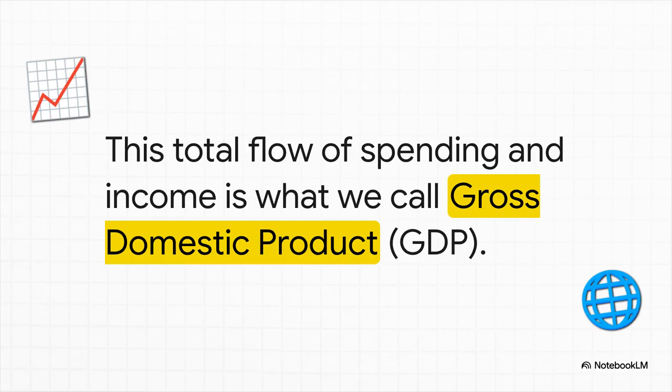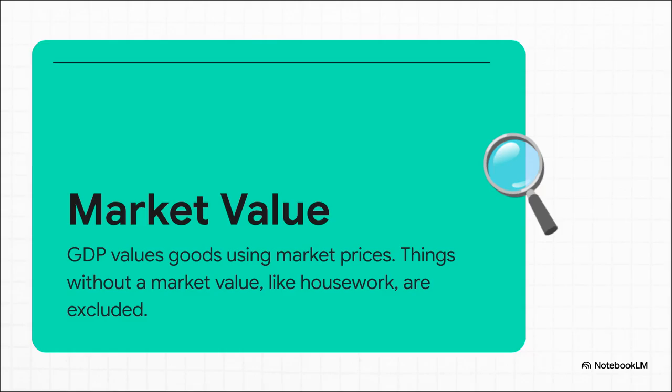At its heart, GDP is just our attempt to measure the total size of that flow. So what is GDP really? Let's build the official definition piece by piece. First up: market value. GDP has to add up all sorts of different things — cars, coffee, computer code, you name it. How do you do that? You use their market prices — it's the only way to get a common unit and turn everything into dollars.